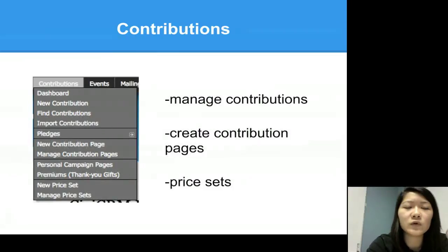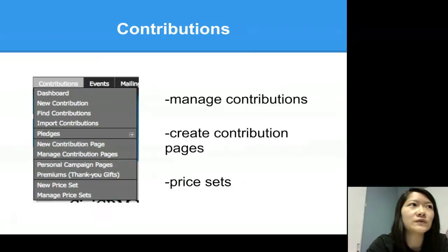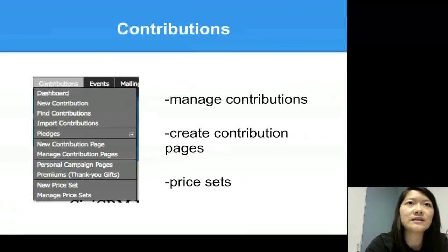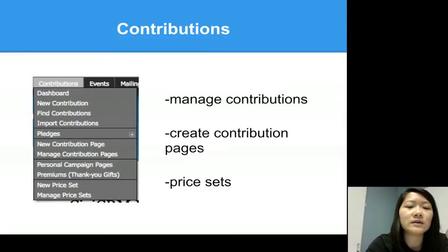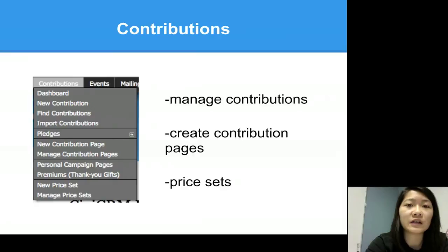Next is the Contributions tab. You can add a new contribution — whether it's a donation or member dues for a membership — or you can create a new contribution page where it could be a membership payment and renewal page. People go there, type in their information, select which membership they want or how much they want to donate, and once they fill out that contribution page it will automatically fill their contributions tab and memberships tab in their contact profile. If you have complex price levels you can create a price set for that, or if it's fairly simple with one membership level you can just add that in the contribution page settings.